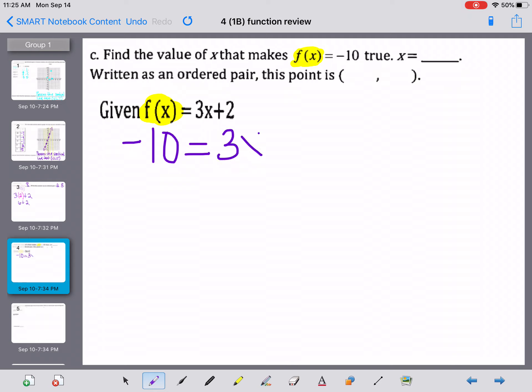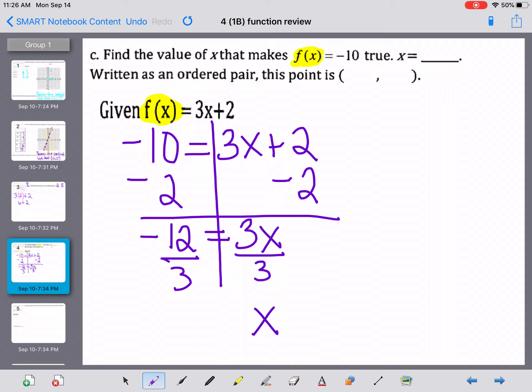So we have to actually solve the equation. And now what we're going to do is subtract 2 from both sides. And by the way, I think Ms. Aldrich does something like this. So when we do that, we get negative 12 equals 3x. And then when we divide both sides by 3, we get x equals negative 4.